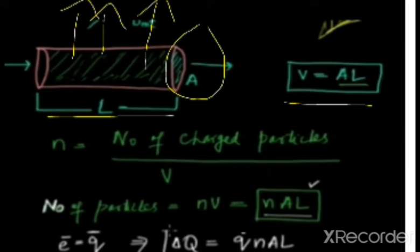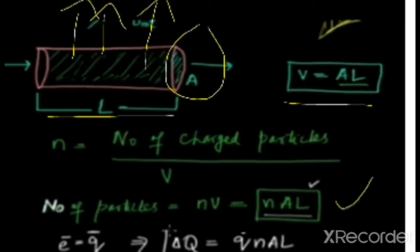Now, the number of charge carriers per unit volume is equal to n. So n is the number of charge carriers that exist in the wire segment. The total number of charge carriers in the wire segment is equal to nAl. This value has now been obtained. Then the total charge on nAl charge carriers — the value of ΔQ, the total charge on nAl charge carriers — is represented by ΔQ, and that value is q·nAl.